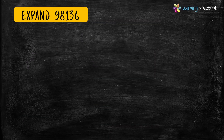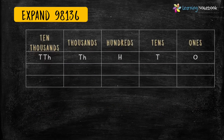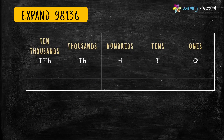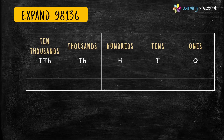Let's take one more example and write the expanded form of another five-digit number. The number is 98,136. Again, let's first make the place value chart for this number.